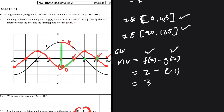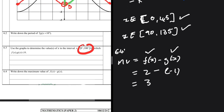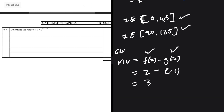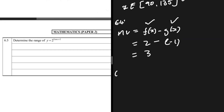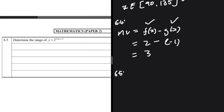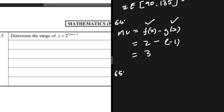That completes 6.4. Now let's look at 6.5. I recall a similar question from the May/June 2023 or 2024 exam — it had e instead of 2 — but the idea is the same. We need to find the range of y = 2^(2cos(x) + 2).